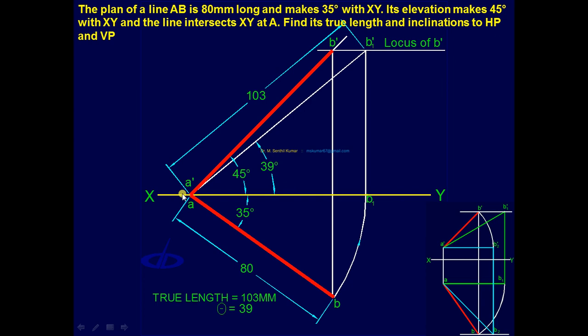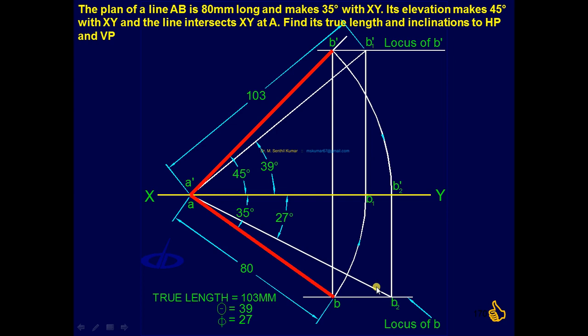Same way, take A dash B dash. Make it rotate and make it parallel to XY line. You will be getting B2 dash. Then through B2 dash draw a projector. Through B draw a locus. You will be getting B2. Draw line joining A B2. That is nothing but the preliminary top view line. Measure its angle. That is nothing but pi.